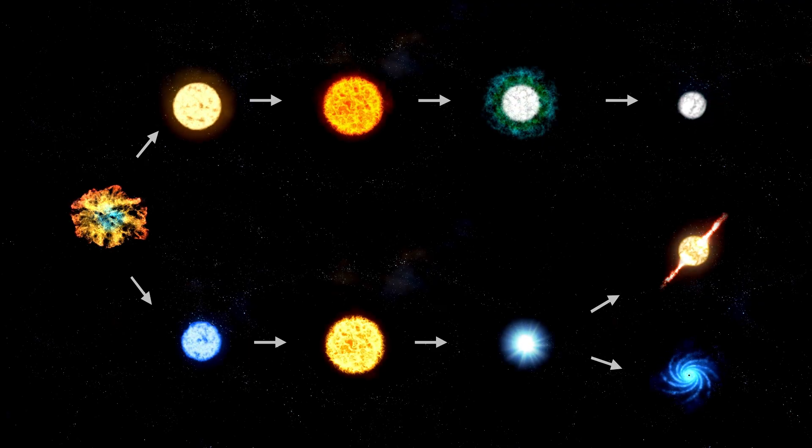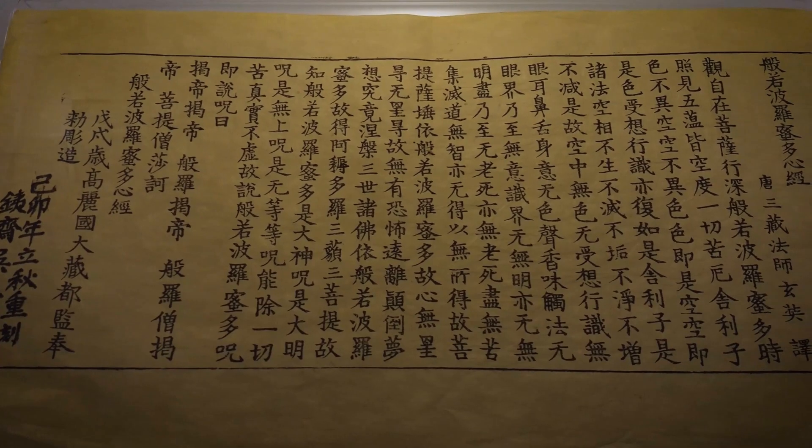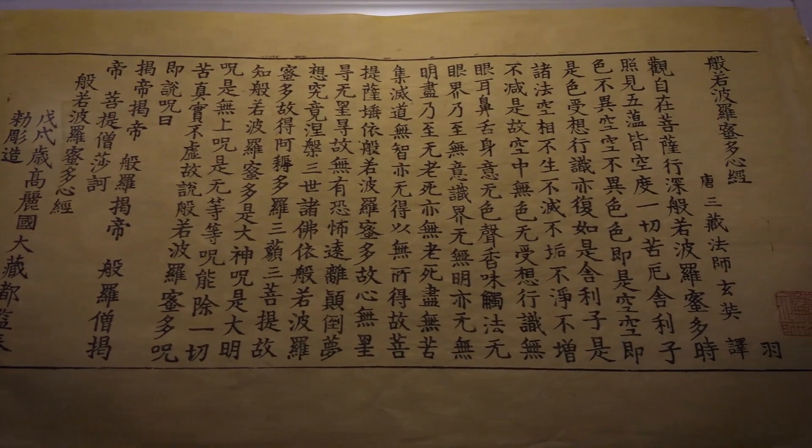Betelgeuse is a red supergiant, much more distant than it appears from Earth, more than 640 light-years away. Although this distance may not seem significant at first, in cosmic terms it is immense.